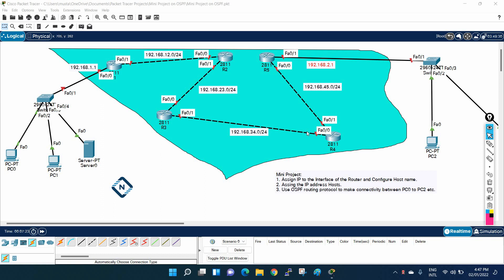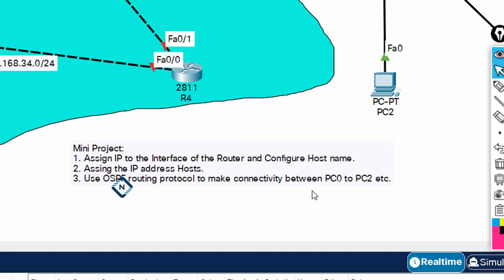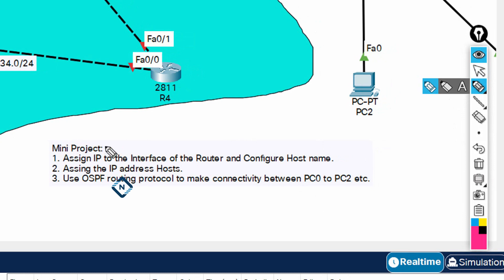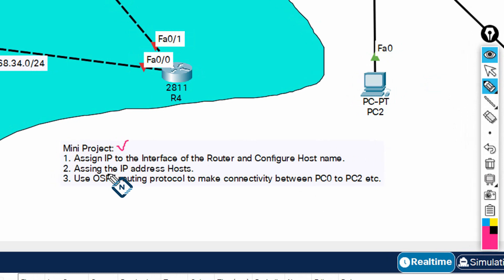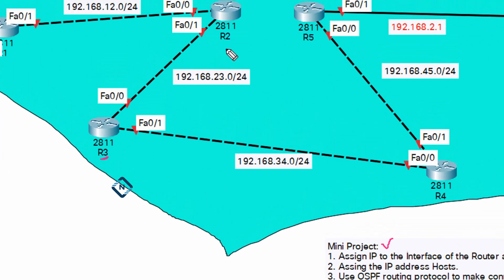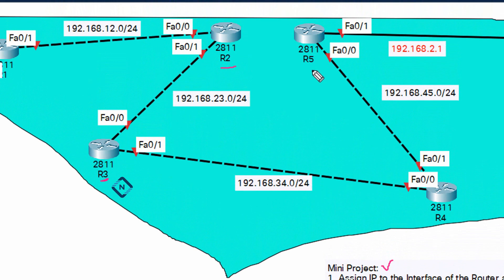Let's see what we need to do in this mini project. As per our manager, we need to perform some tasks: assign the IP address to the interfaces of the routers, and configure the hostname on all routers — R3, R2, R5, and others.